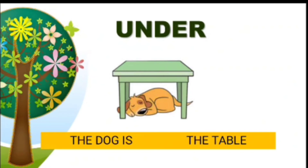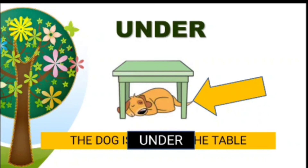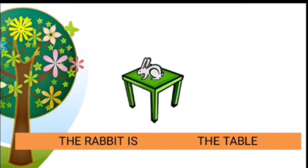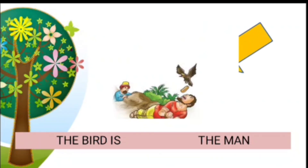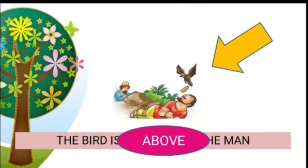Where is the dog? Yes, that's 'under' — the dog is under the table. How about the rabbit? Where is it? Right — the rabbit is on the table. Now, where is the bird? Yes, right — the bird is above the man.